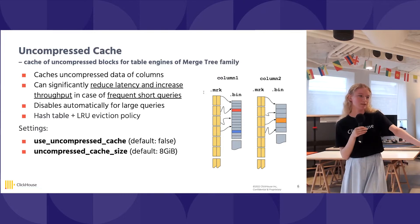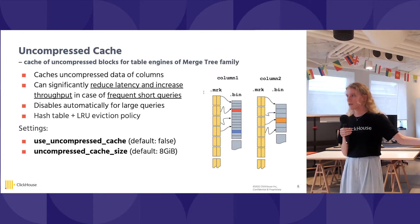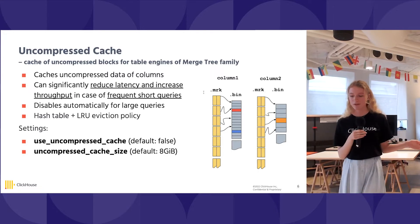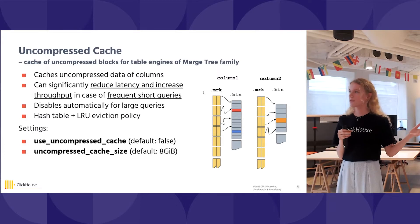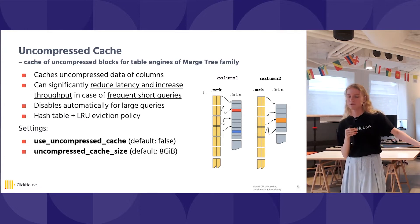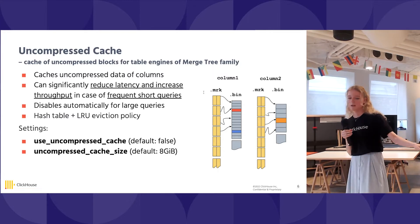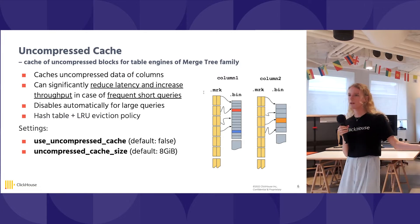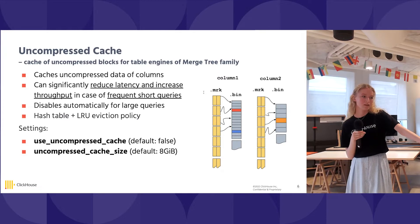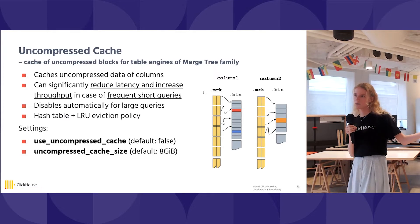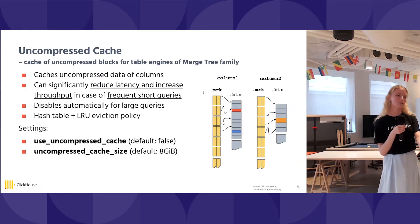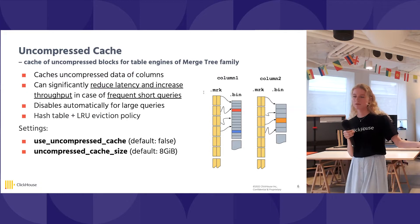One more cache for MergeTree family table engines is the uncompressed cache. As you know, data in ClickHouse is stored in a compressed format, which has a lot of benefits. But if you have a lot of short queries, much of the query execution time is taken by reading from disk and decompressing the data. This can be optimized. If you have frequent short queries, you can turn on uncompressed cache, which is turned off by default. It can really reduce latency and increase throughput for those queries quite a lot. It is also quite safe for large queries because it will be automatically turned off for large queries, so they will not pollute the cache, and the benefits will remain for the small queries.